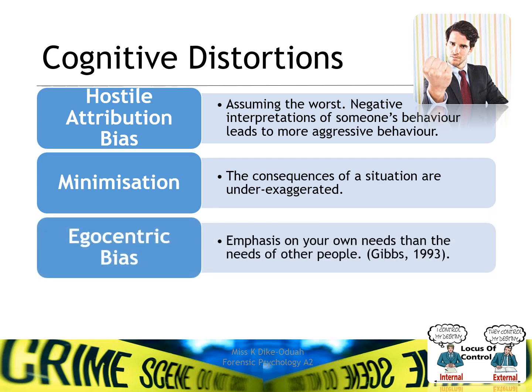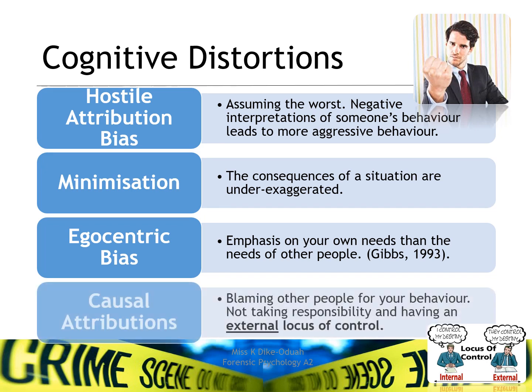Ego-centric bias involves placing emphasis on your own needs over the needs of other people. And finally, causal attributions — blaming other people for your behaviour, not taking responsibility, and having an external locus of control.